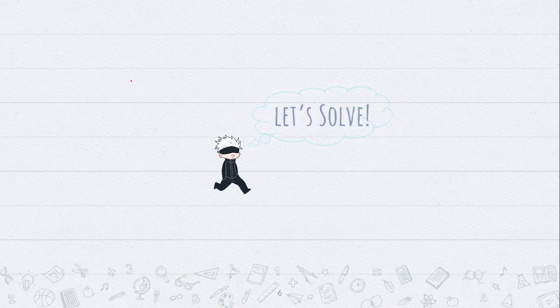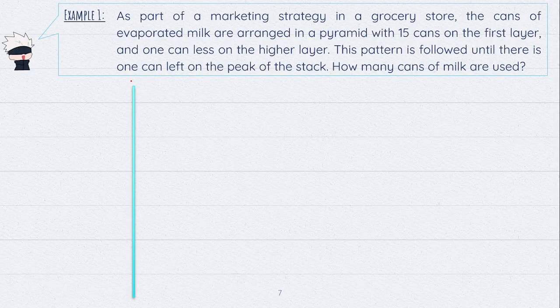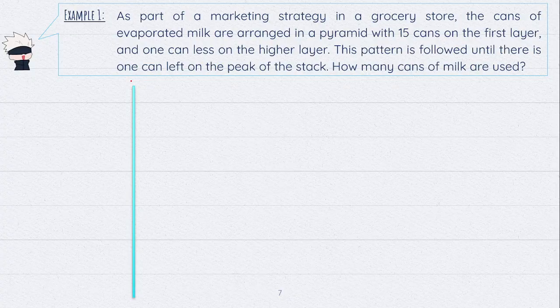We are now going to apply the step-by-step process of solving word problems using the tips and formulas from the previous slides. For example number 1: as part of a marketing strategy in a grocery store, the cans of evaporated milk are arranged in a pyramid with 15 cans on the first layer and one can less on each higher layer. This pattern continues until there is one can left on the peak of the stack. How many cans of milk are used?